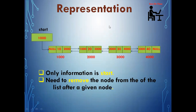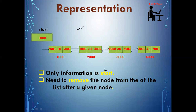From the representation of a doubly linked list we can see that every node keeps the address of the next node as well as the address of the previous node, along with the information associated with it. Here the only information we are having is start.